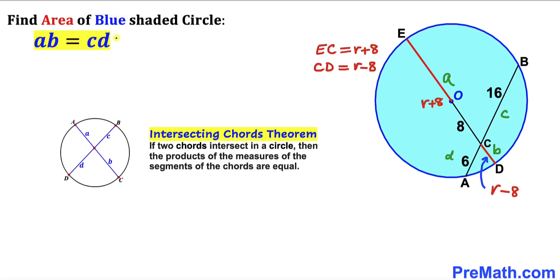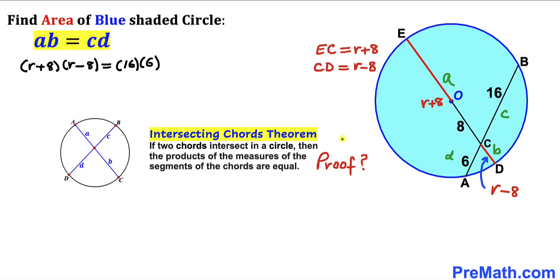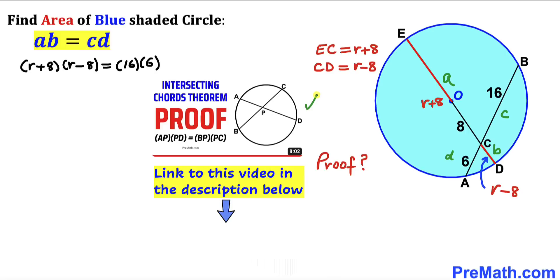Filling in the equation: A times B gives us (r + 8) times (r − 8), equal to C times D, which is 16 times 6. If you're wondering about the proof of this intersecting chords theorem, I've already uploaded a video on this proof and the link is in the description below.